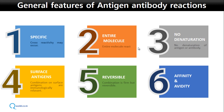Whenever reactions happen, the entire molecule of antigen or antibody takes part — there is no denaturation of either during the process. Surface antigens are immunologically more relevant, so combinations involving surface antigens are more important. These reactions are firm but reversible, and the firmness of the reaction is decided by affinity and avidity.